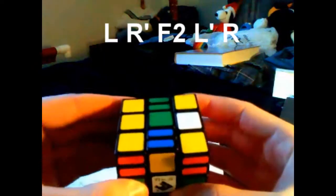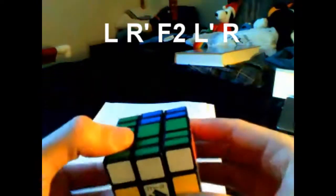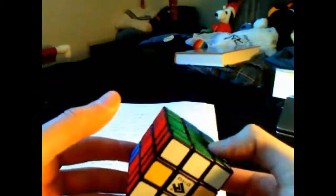L R' F2 L' R. You can see that the F2L pairs are intact, and OLL is intact. Do this with each of the edges.